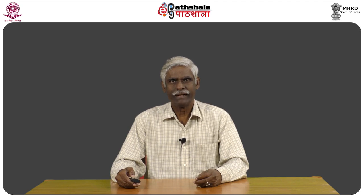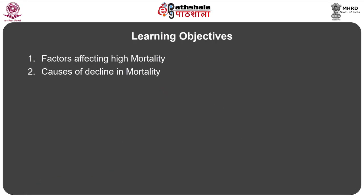Dear students, as part of the paper on mortality, we need to understand what are the factors that contributed to the decline in mortality in the past in developed countries. This module is intended for this, and through it we will learn about factors which have affected high mortality in developed countries in the past — factors like famines and food shortage, epidemic diseases, recurrent wars, and poor sanitary conditions.